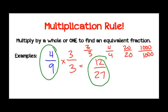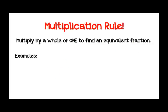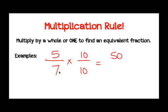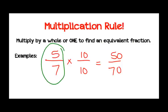Let's try another example. Let's say that we had the fraction 5/7, and we wanted to use the multiplication rule to find an equivalent fraction. Let's multiply by 10 over 10. Multiply the numerators: 5 times 10 is 50. Denominators: 7 times 10 is 70. And we've now found an equivalent fraction — 5 sevenths is equivalent to 50/70. All we did was multiply by a whole or by 1. 10 out of 10 would be a whole, which is equal to 1.